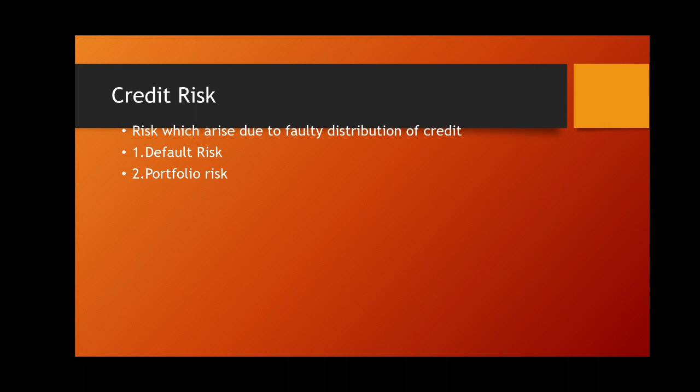Credit risk arises due to non-repayment of the principal — that is, whatever loan amount was borrowed. If the counterparty fails to repay the principal, if they fail to repay the interest, or if there is inability to meet contingent liabilities such as the letter of credit, credit risk arises. Credit risk is not just caused by faulty loan distribution; it also arises due to various facilities given by the bank such as letters of credit. The Nirav Modi case is totally related to the letter of credit. Default by the client to meet obligations also causes credit risk.